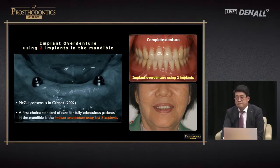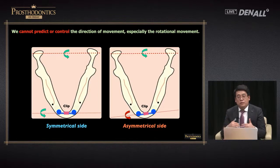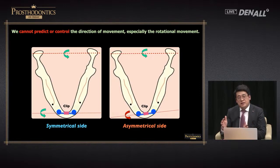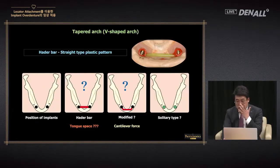From a 2002 report, the first treatment of choice is complete denture in the upper and overdenture using two implants in the lower. Regarding implant placement position: we need to place the implant anteriorly, parallel to the line connecting both condyles. Overdenture using two implants is generally a tissue-supported overdenture, so tissue movement should be allowed. If you place implants asymmetrically, resistance is created against movement. The position of implant placement should differ depending on the shape of the arch.